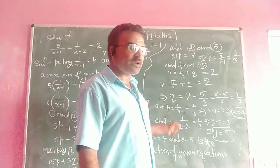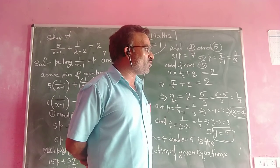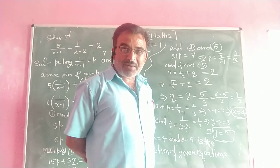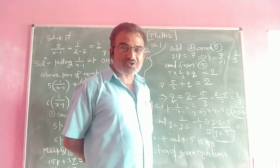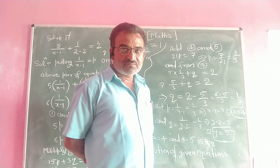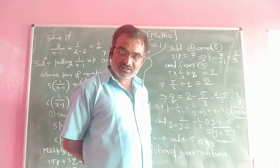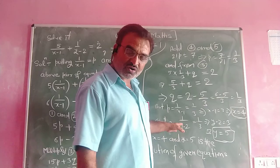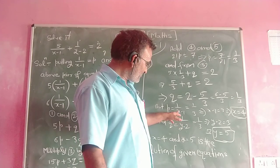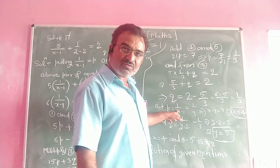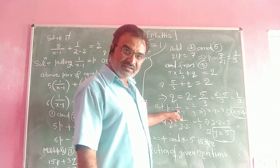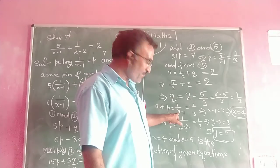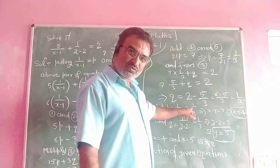So p is equal to 1 upon 3 and q is equal to 1 upon 3. But we had already supposed that 1 upon (x minus 1) is equal to p and 1 upon (y minus 2) is equal to q. Equating these values of p and q, we get 1 upon (x minus 1) is equal to 1 upon 3.